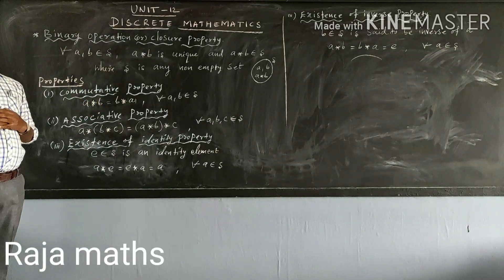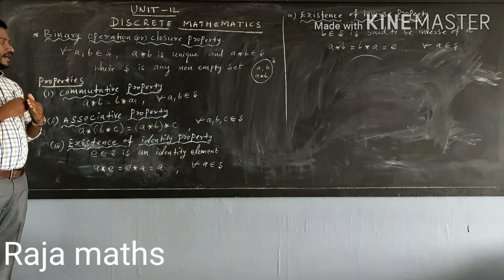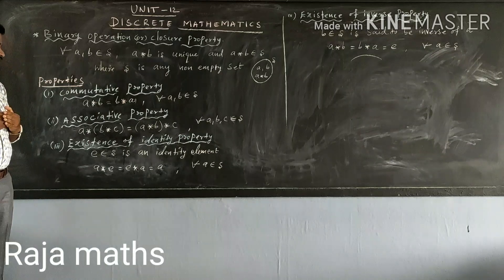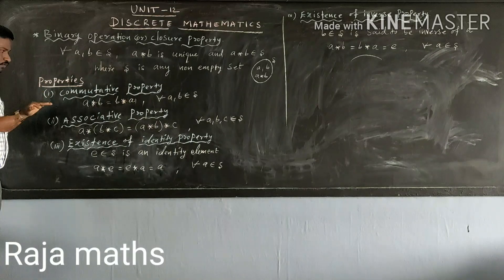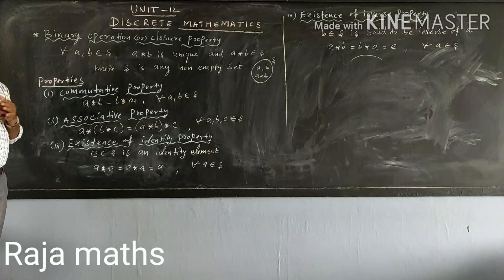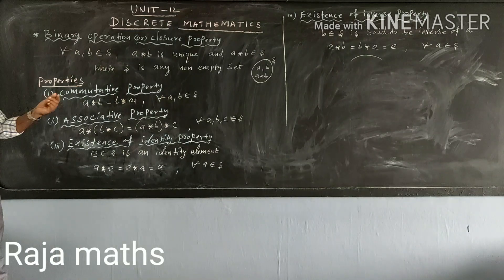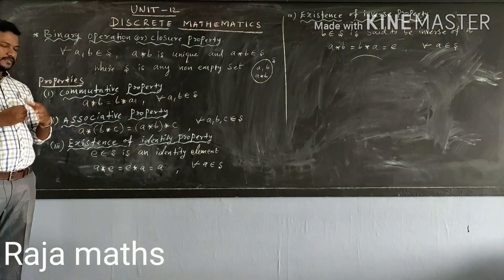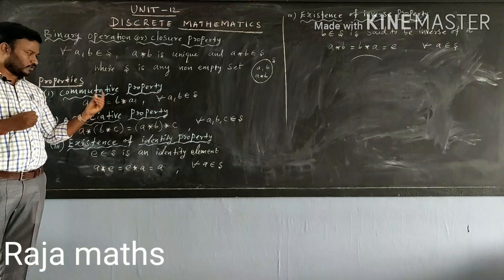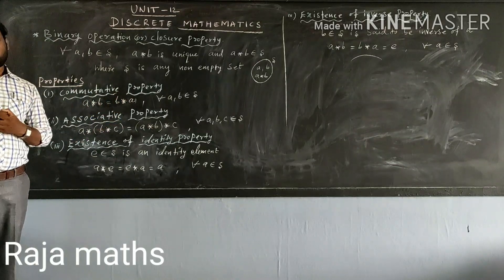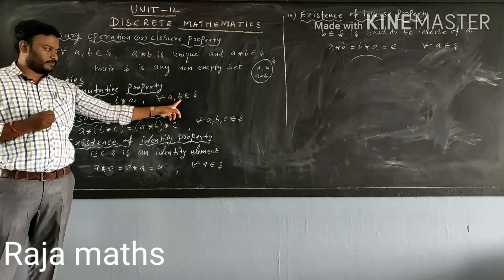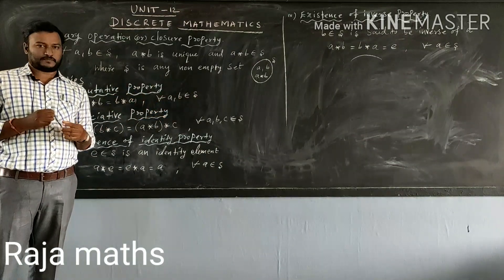That is a binary commutative property. The commutative property is: a star b is equal to b star a, for every a, b belonging to S.